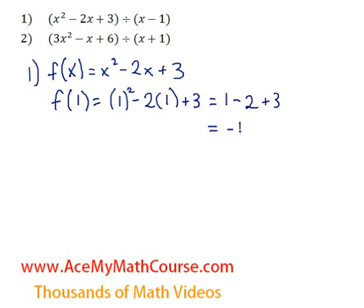1 minus 2 is negative 1, plus 3, that's just 2. So we know that the remainder of this division is just 2.